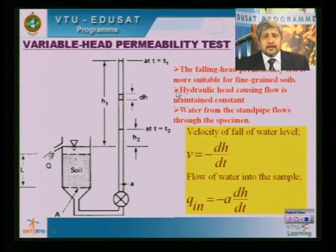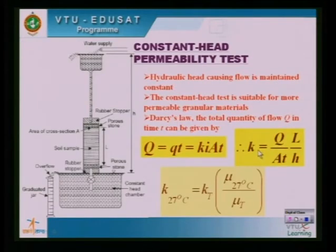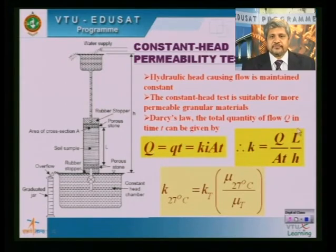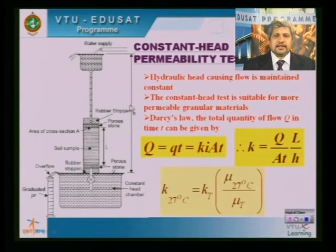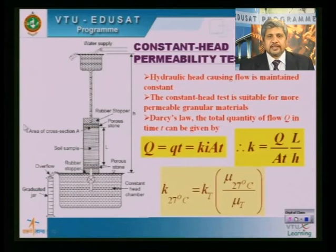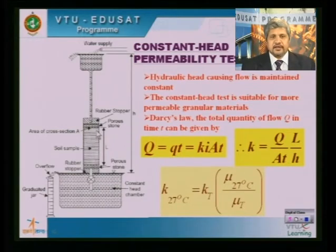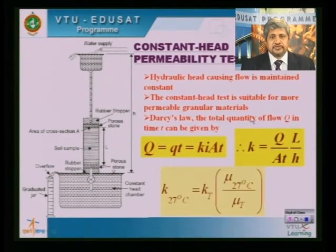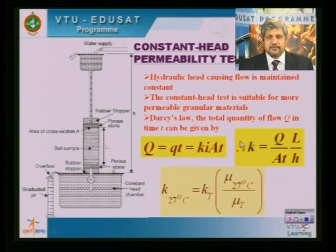The coefficient of permeability is calculated for different time intervals T1, T2, T3, T4 with corresponding Q values Q1, Q2, Q3, giving K1, K2, K3 for each repetition. The average value of K is then computed. After the experiment, the water content of the specimen is determined, along with density and void ratio, all of which are reported alongside the average K value.